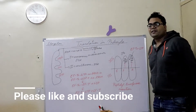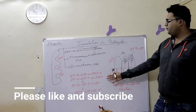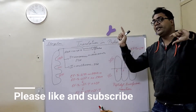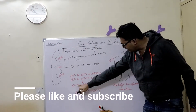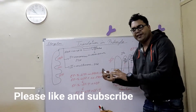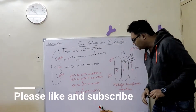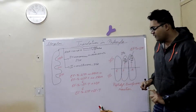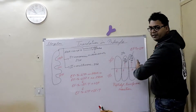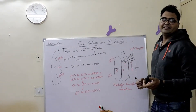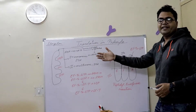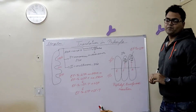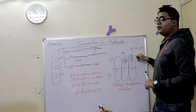If the codon-anticodon pairing is correct, the EFTU-GTP hydrolyzes itself to become EFTU-GDP, which is then released from the A site. Another factor, elongation factor T (EFT), comes in and has specific affinity for EFTU-GDP. EFT binds to EFTU-GDP and causes the release of GDP. The resulting EFTU-EFT complex then binds a new GTP molecule, regenerating EFTU-GTP and releasing EFT. This cycle keeps repeating, regenerating EFTU for subsequent rounds. This activity is called GTPase activity.